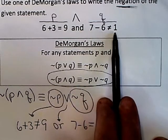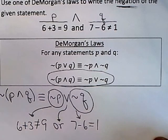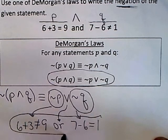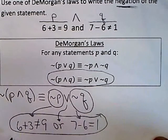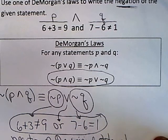Well if Q were 7 minus 6 is not equal to 1, the negation of Q would be this statement, 7 minus 6 is equal to 1. So this statement right here is the negation of the original statement. And of course we used DeMorgan's Laws to get that result.